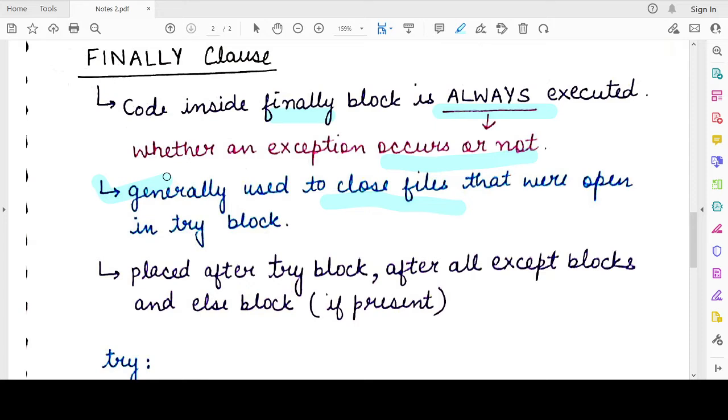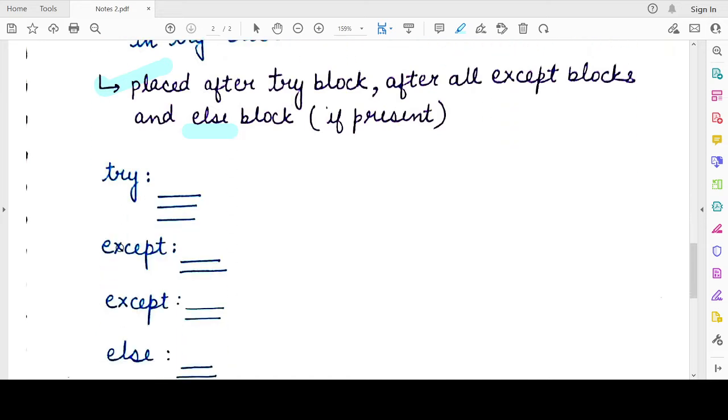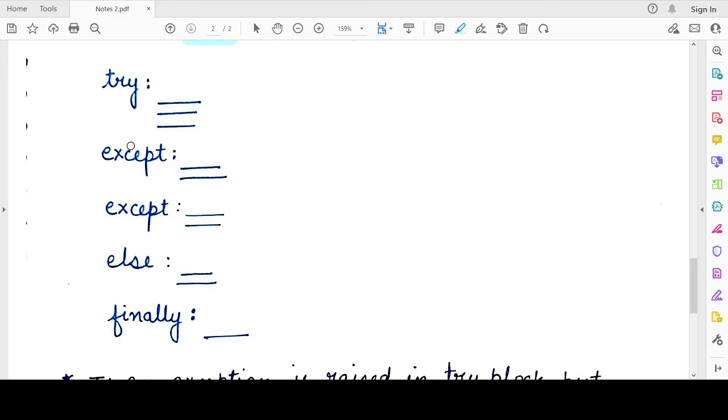And the finally clause is written at the very end after writing all the except blocks. And if there is also an else block, then even after writing the else block, you will write the finally clause. So if you have a try statement, then you write an except. If there is a single except and nothing else after it, you will write the finally keyword after it if you want to specify any such statements in the finally block.